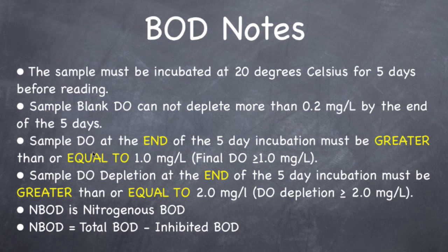For your actual samples, at the end of the 5-day incubation the final DO must be greater than or equal to 1 mg per liter. So you've incubated it for 5 days, you pull it out, you read the DO — if it is less than 1 mg per liter, you cannot use that sample. You can use other samples if they do meet this rule, but this sample is invalid. Throw that sample out, you can't use it at all.